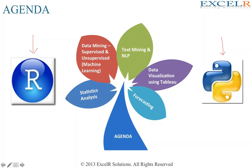The five key areas are: statistical analysis, data mining, and supervised and unsupervised learning. Data mining is also called machine learning and is heavily used in artificial intelligence. You will also learn text mining and natural language processing, and data visualization using Tableau. Forecasting using time series is also covered. These concepts will be sufficient for you to switch your career into data science and become a successful data scientist.